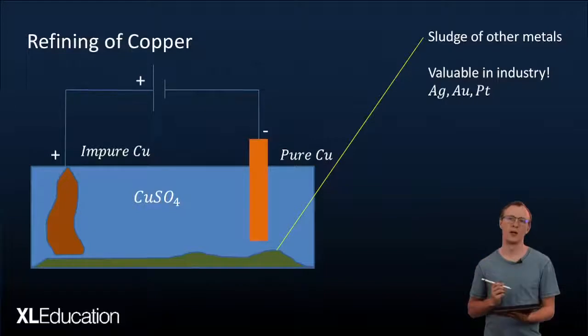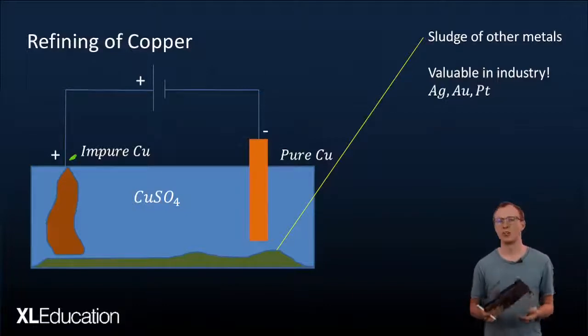Then we've got the refining of copper. So what we've got there is an anode that is made up of impure copper. So when we take copper out of the earth it's not just pure copper unfortunately there's other metals in it as well.